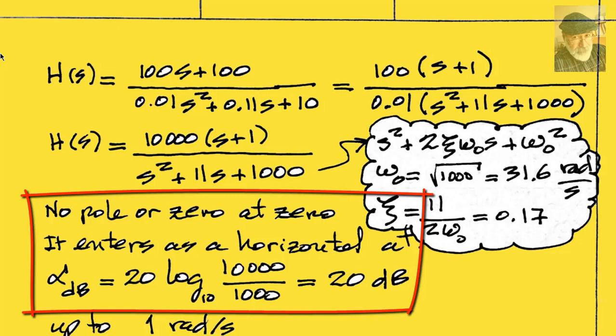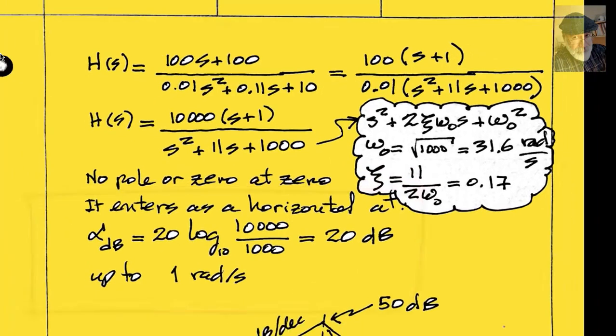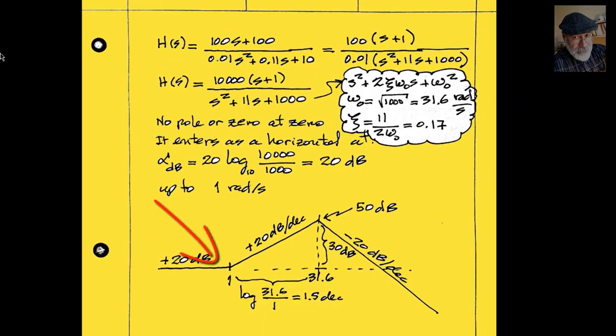That is the initial value of the curve on the left. 20 decibels. At omega 1 radians per second, those 20 decibels per decade finds a single zero, a simple zero, and starts to climb up with a slope of positive 20 decibels per decade.